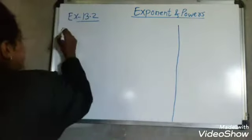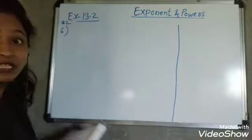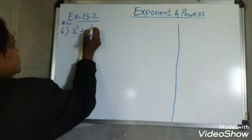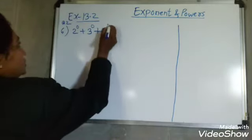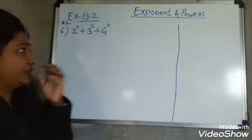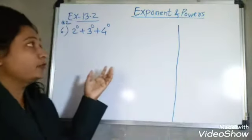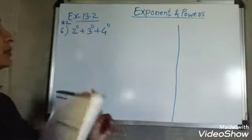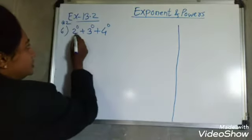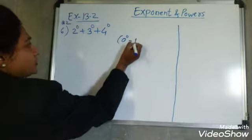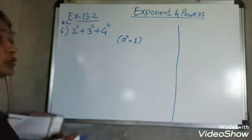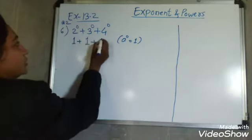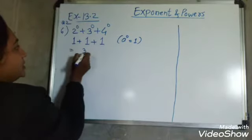Now our 6th example: 2 raised to 0 plus 3 raised to 0 plus 4 raised to 0. We already learned the laws of exponents in the previous video. The formula we use here is: A raised to 0 is equal to 1 — meaning any number with power 0 gives answer 1. So 2⁰ = 1, plus 3⁰ = 1, plus 4⁰ = 1. Then 1 plus 1 plus 1 equals 3. Our answer is 3.